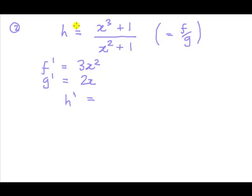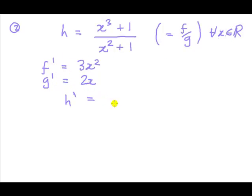Alright, so for my second example, let's look at this function: x cubed plus one, all over x squared plus one. The top bit is my f, the bottom bit is my g. We can see that this function exists for all x, because even for negative numbers, since it's a squared term, you're never going to be dividing by zero for any x. So this function exists for all x on the real line. That's the derivative of f, that's the derivative of g. And then we plug that into the formula for the quotient rule.